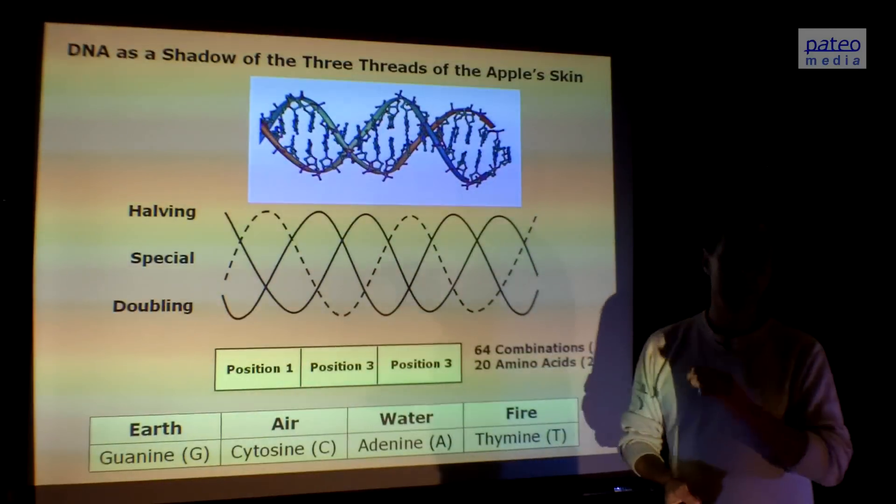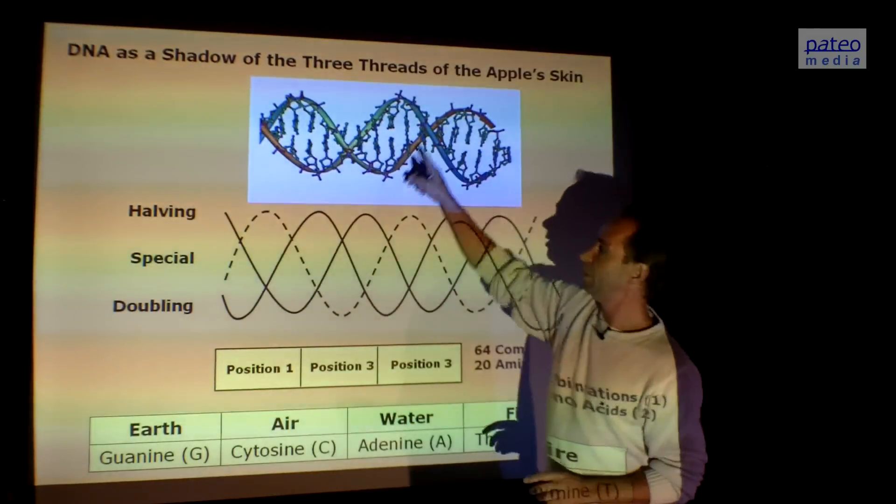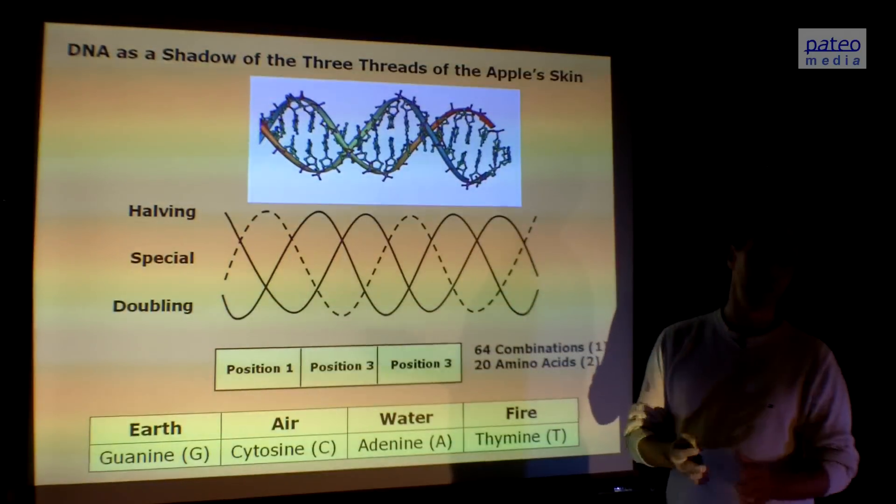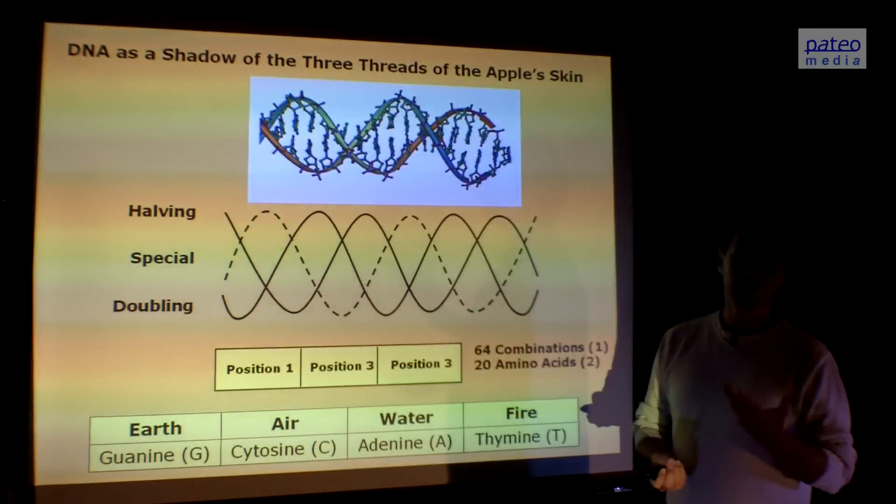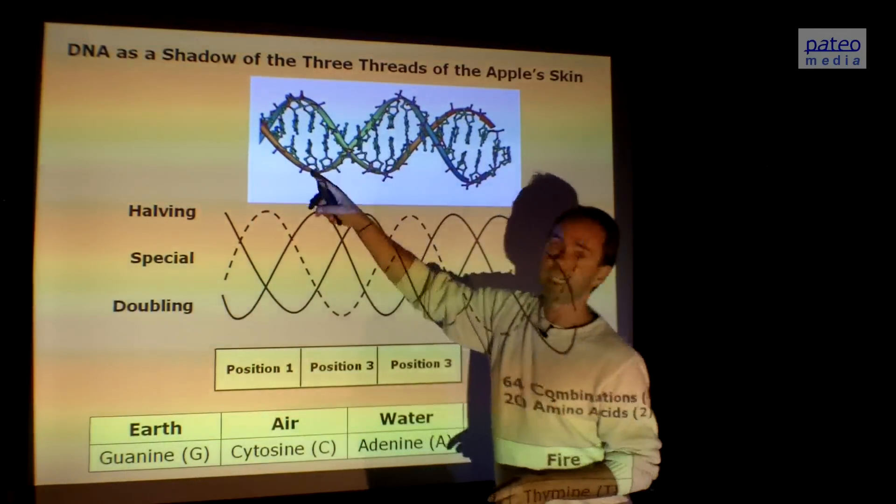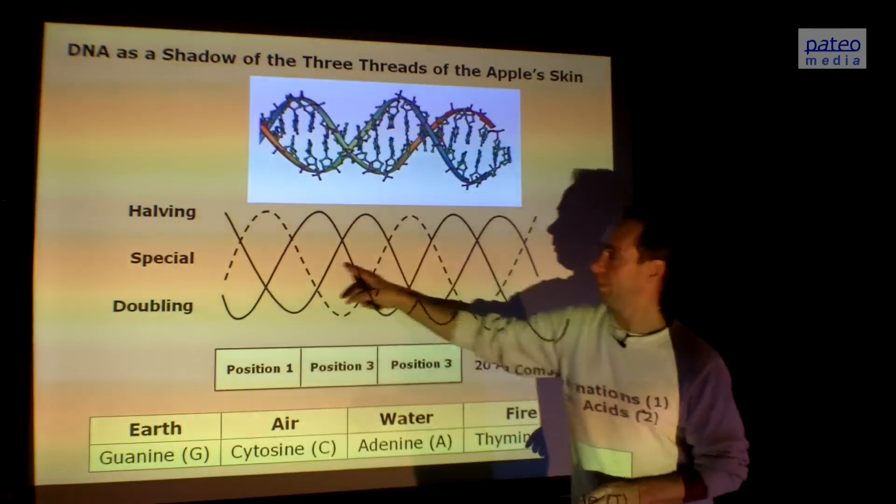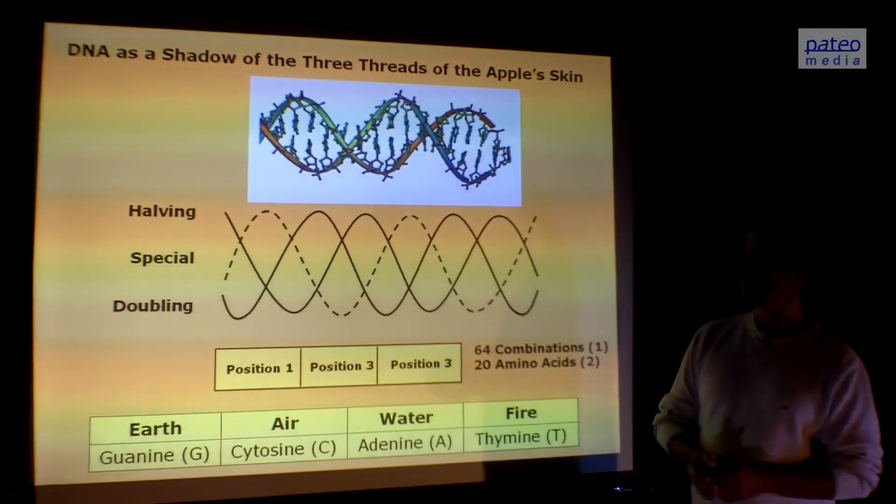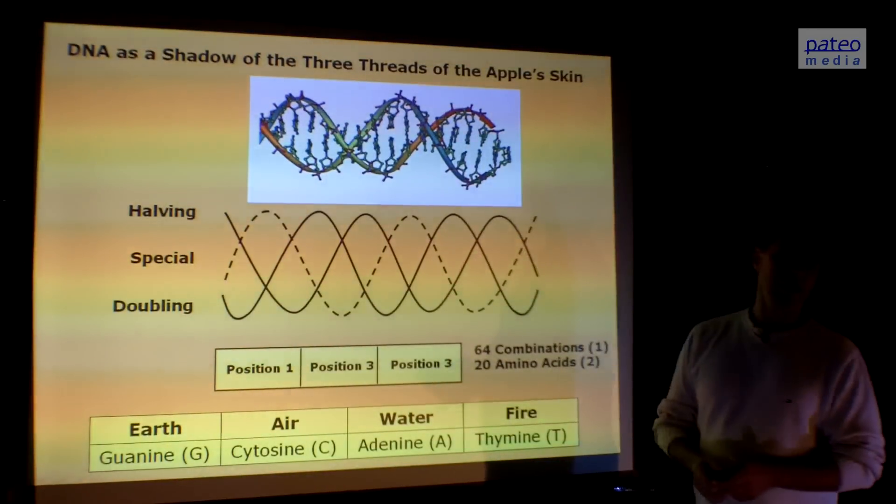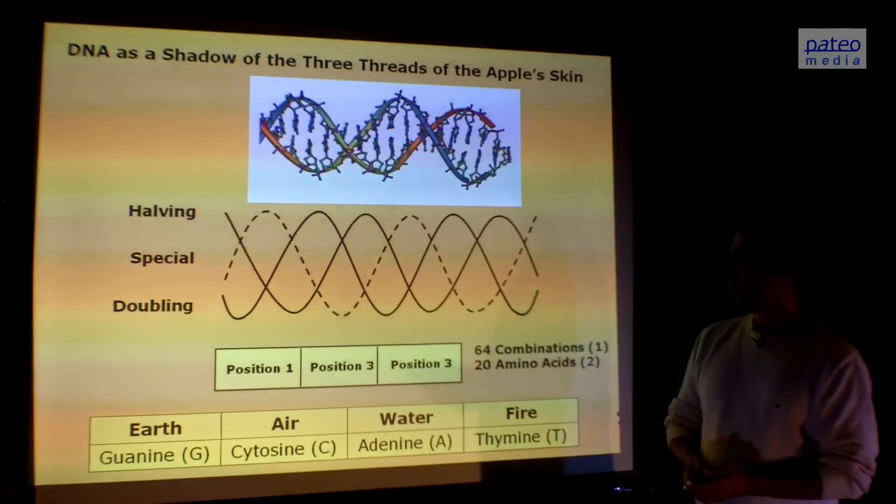We also see these three different threads in our DNA. We can only see two DNAs because the shadow of the special one is not visible in our world. There's no matter connected to it. But of course, energetically, it is there. And if you see carefully, there is a third helix missing. There is space exactly for a third helix. And then you get this rhythm. Here you see that they are filling all the spaces. So that means there are three threads in fact in our DNA, which is exactly the same as the three threads of the skin of the apple.